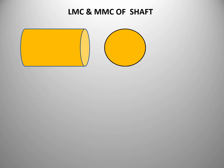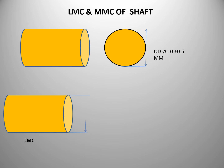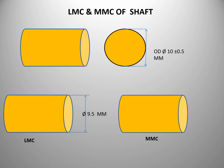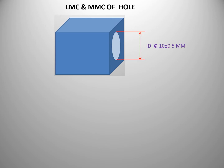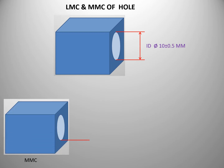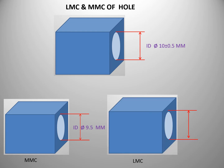Next, consider a shaft with a tolerance of 10 plus or minus 0.5. The LMC condition of the shaft is 9.5 and the maximum material condition is 10.5 mm. Next, consider an inner diameter with a given tolerance dimension of 10 plus or minus 0.5. The maximum material condition of this ID is 9.5 and the minimum material condition is 10.5.